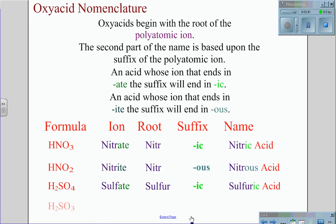For H2SO3, we are dealing with the ion sulfite ending in -ite. So we're going to add to the root sulfur, we're going to add O-U-S because of the -ite, giving us the overall name sulfurous acid.